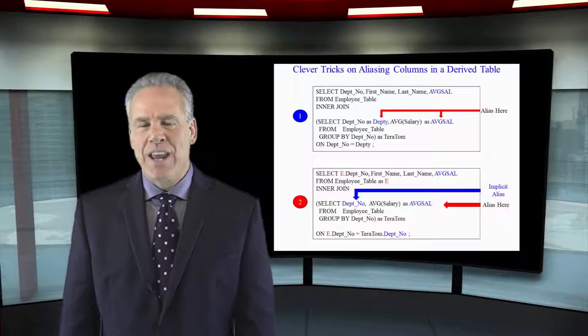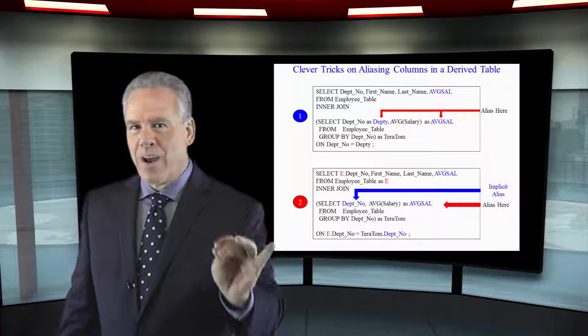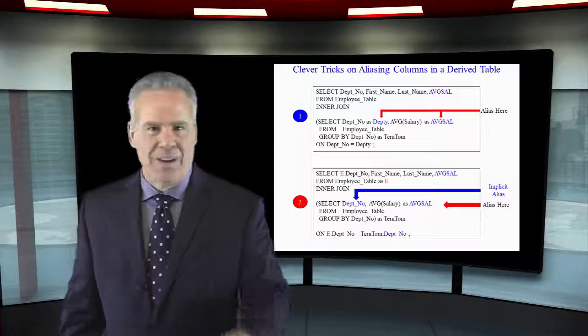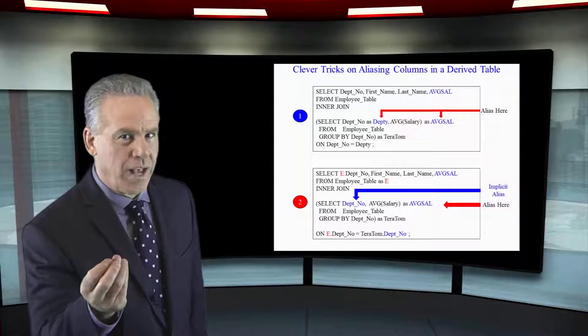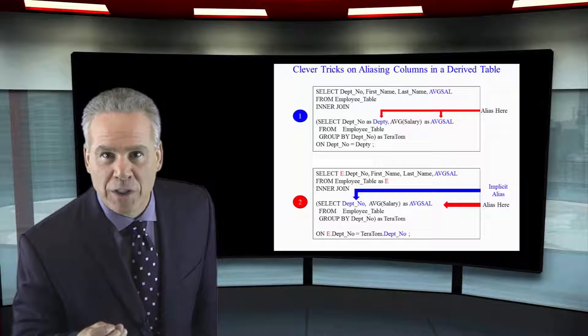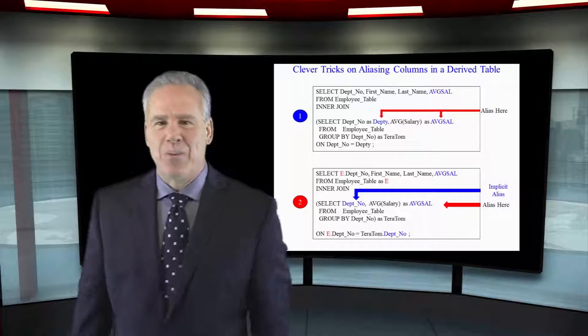In a derived table, you must always name the derived table name. If you call it Tom, it works faster. That's my story, I'm sticking to it. You can name it anything you want.